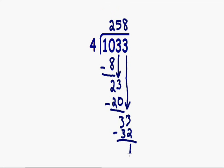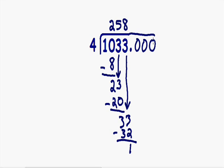After we brought down our last number, our remainder is not 0 — we have a remainder of 1, so we are not finished with this problem. To finish, I'm going to do the same thing I've been doing. I'm going to add some numbers after 1,033 and make it 1,033.000. This has not changed the problem at all — 1,033 is exactly the same as 1,033.000. I just added trailing zeros. You don't always have to add 3; sometimes you need 1, sometimes more.